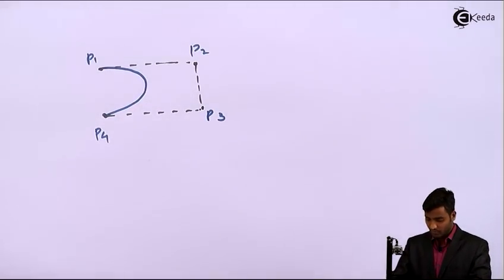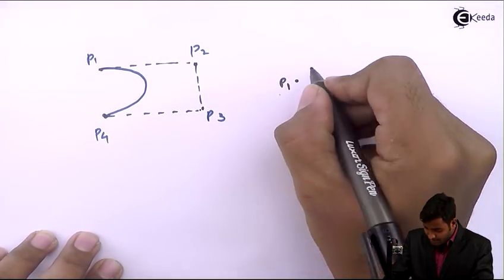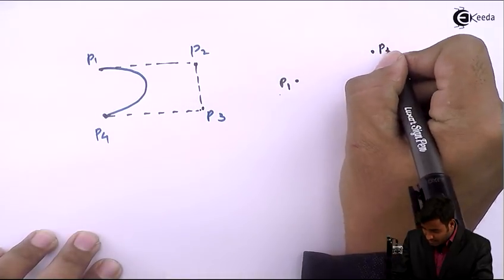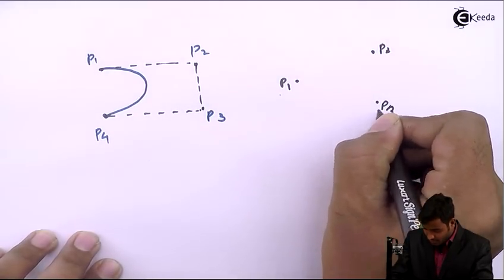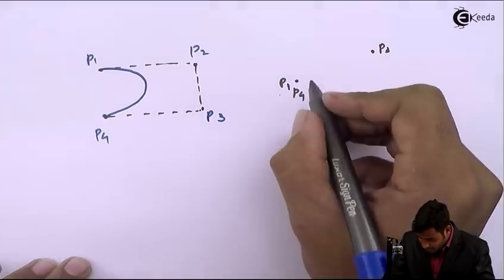If this is P₁, P₂, P₃, and P₄, where P₁ and P₄ are the same point, then when I join all these control points, the curve is closed.